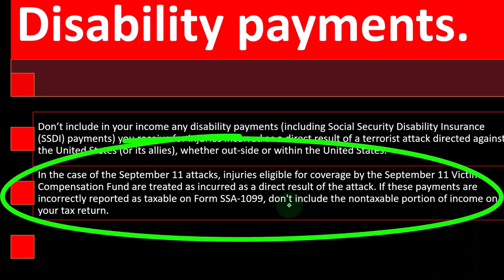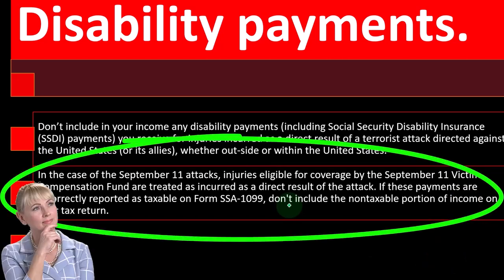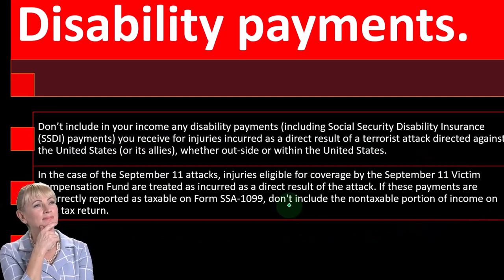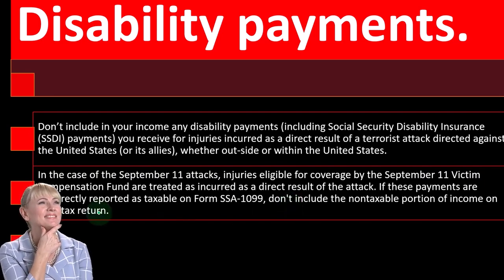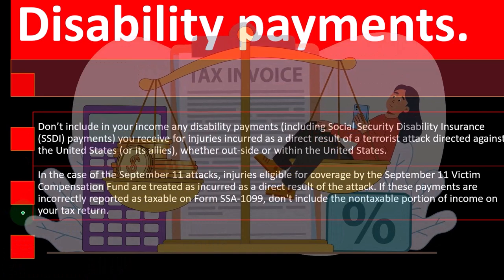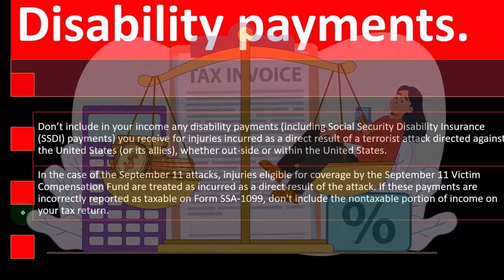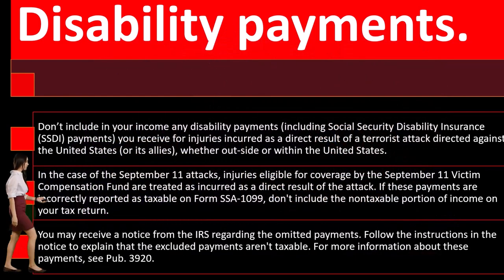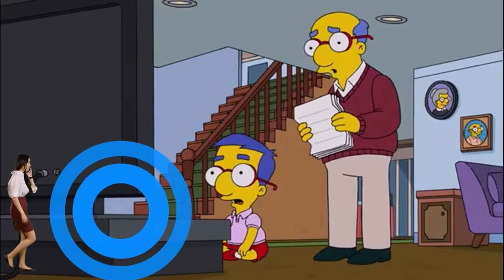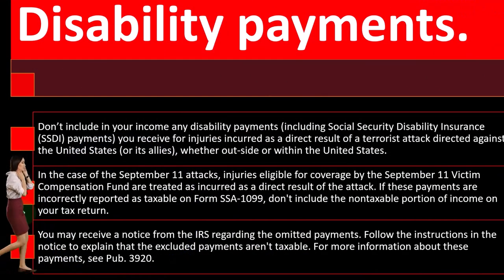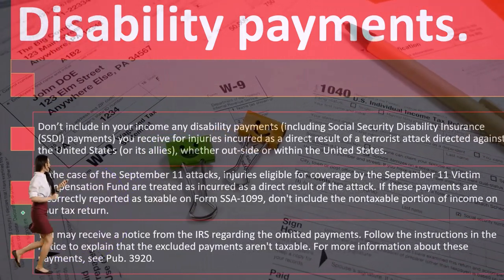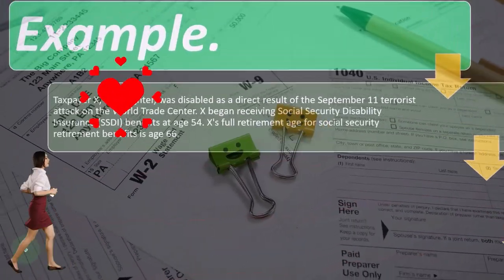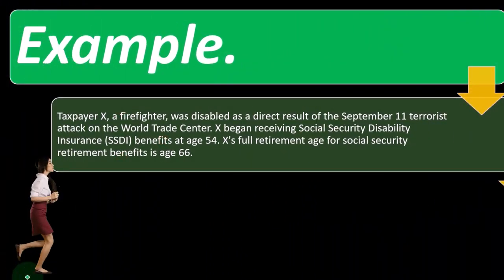In the case of September 11th attacks, injuries eligible for coverage by the September 11th Victim Compensation Fund are treated as incurred as a direct result of the attack. If the payments are incorrectly reported as taxable on Form SSA-1099, don't include the non-taxable portion in income on your tax return. You may receive a notice from the IRS regarding the omitted payments — follow the instructions in the notice to explain that the excluded payments aren't taxable. For more information, see Publication 3920.